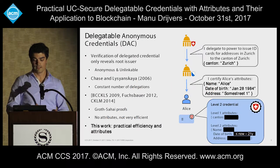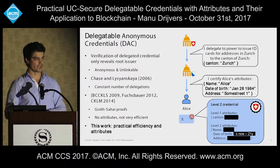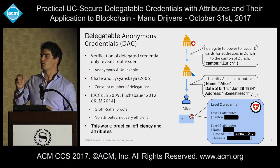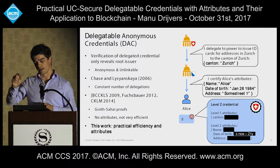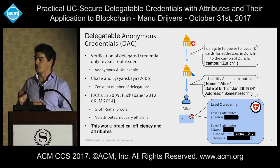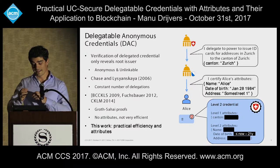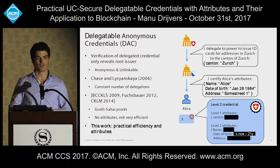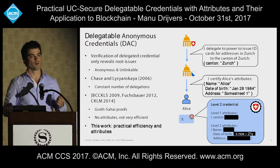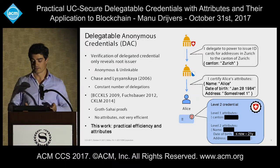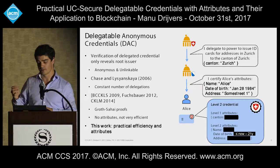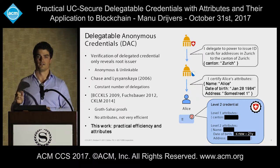What we need here are delegatable anonymous credentials. In delegatable anonymous credentials, we can have one root issuer, then one or more intermediate issuers, and then a user. The user can prove that they have a credential while only revealing the public key of the root issuer. In our example, Alice can prove she has a credential from the Swiss government while hiding that the Canton of Zurich was the intermediate issuer.